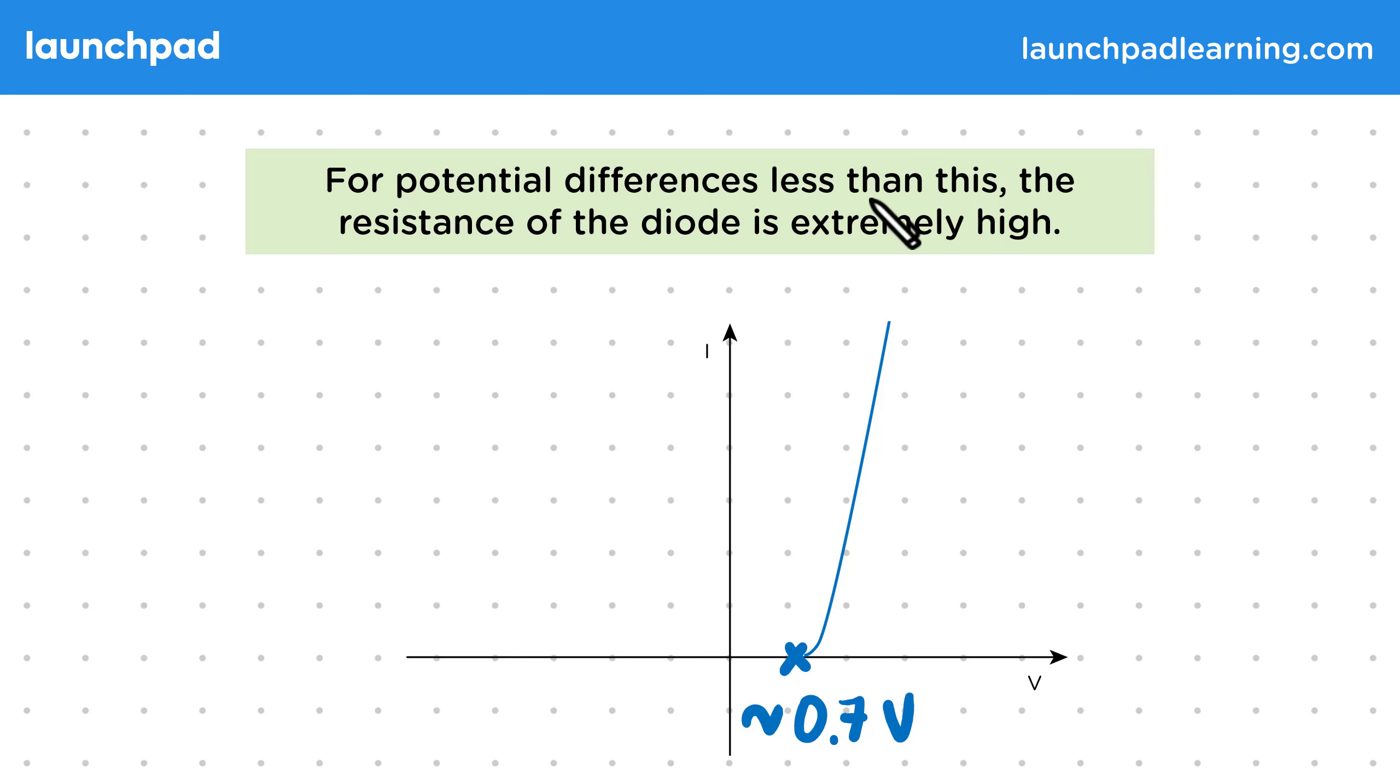Then for potential differences less than this, the resistance of the diode is extremely high. Here the graph looks like this. It covers the potential differences below the threshold potential difference and all negative PDs.